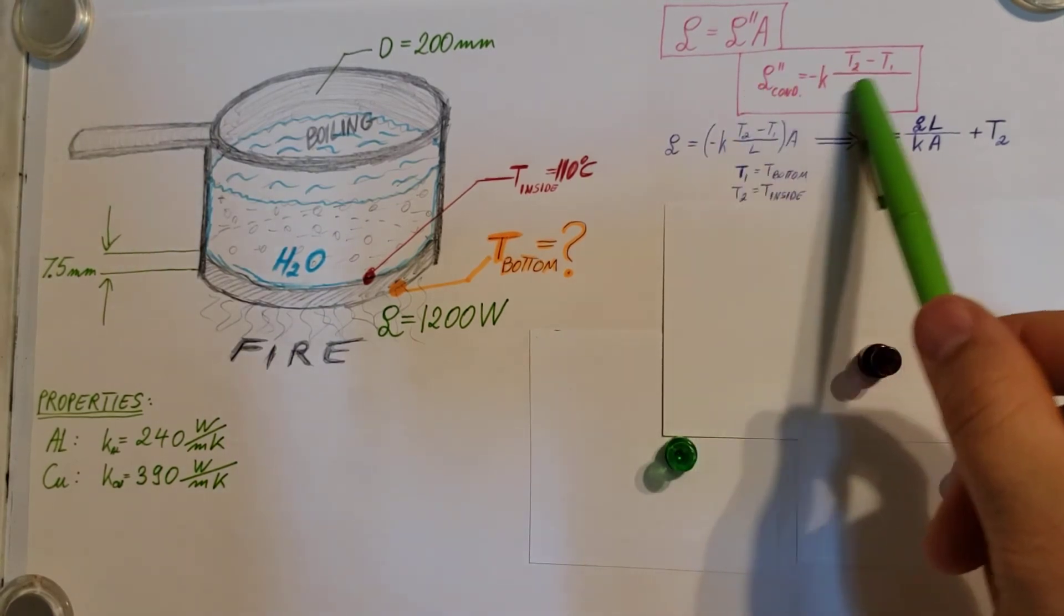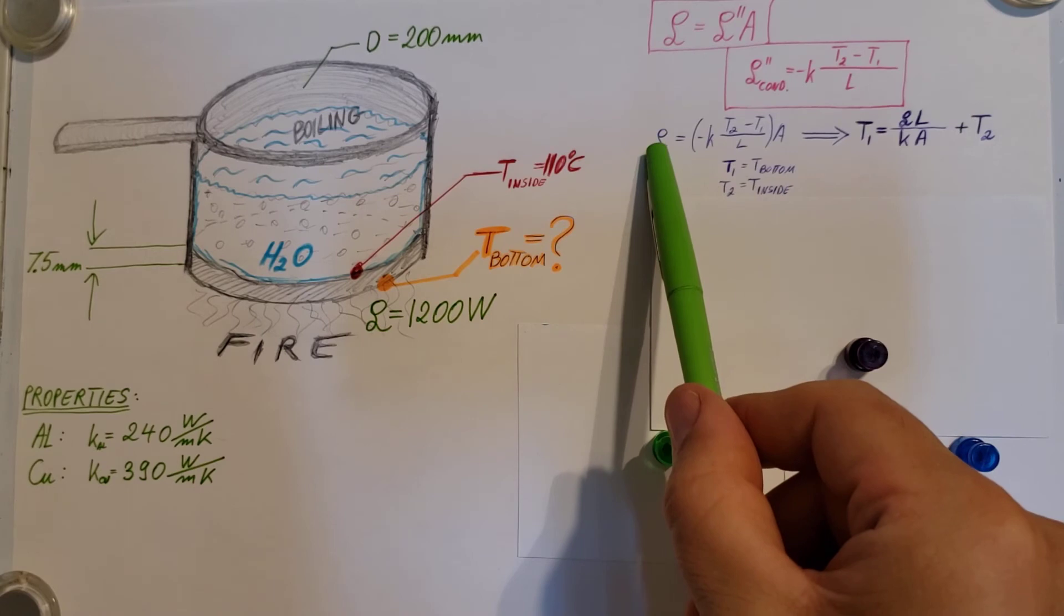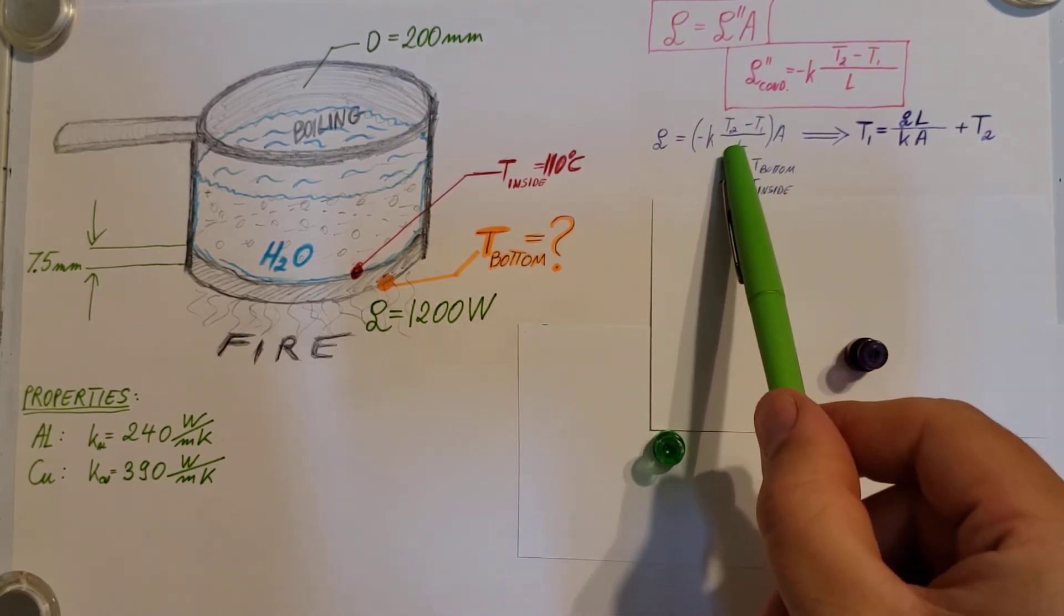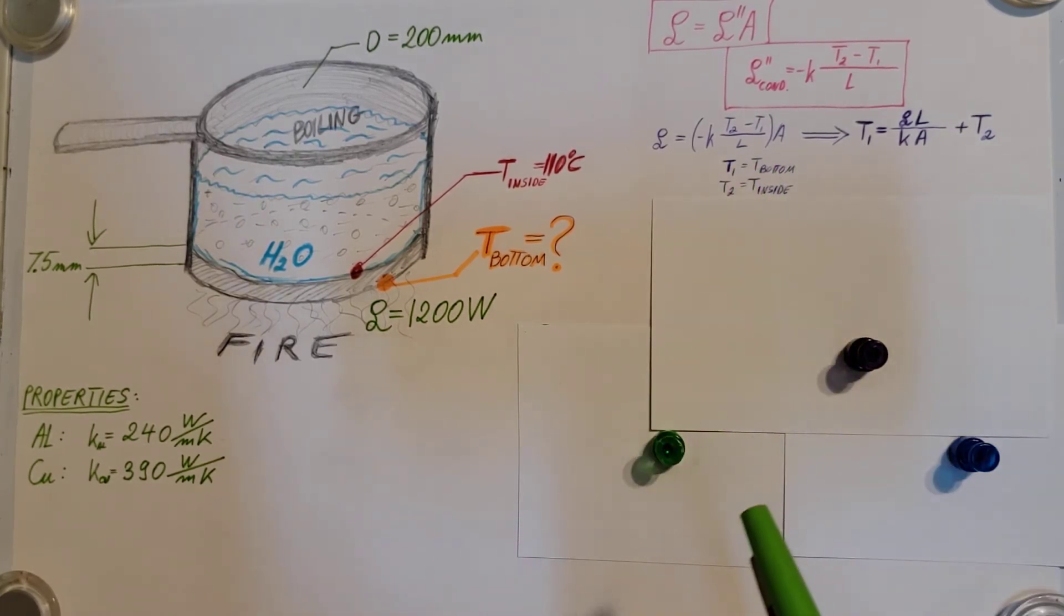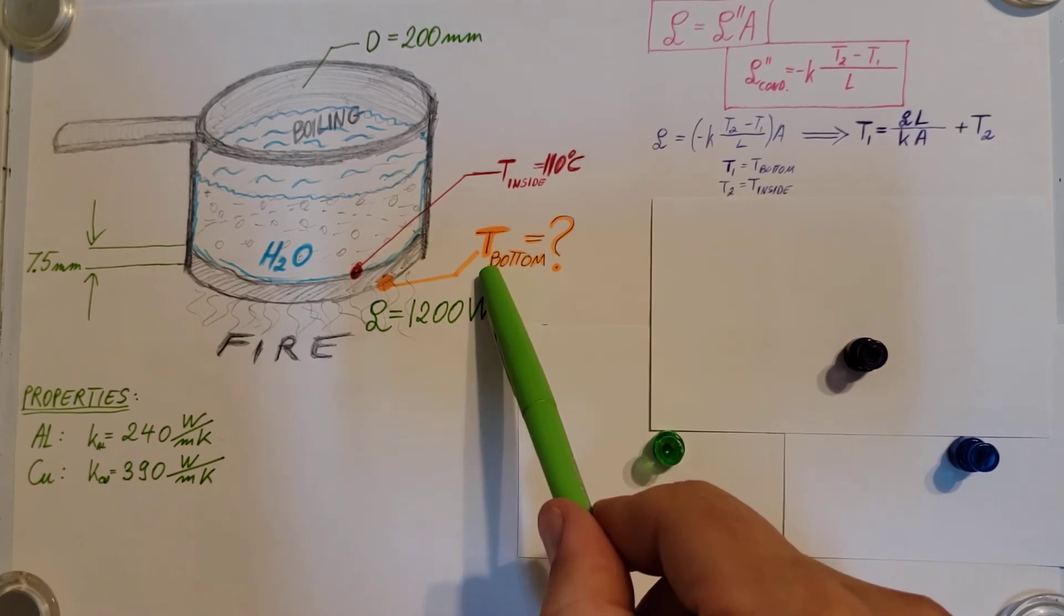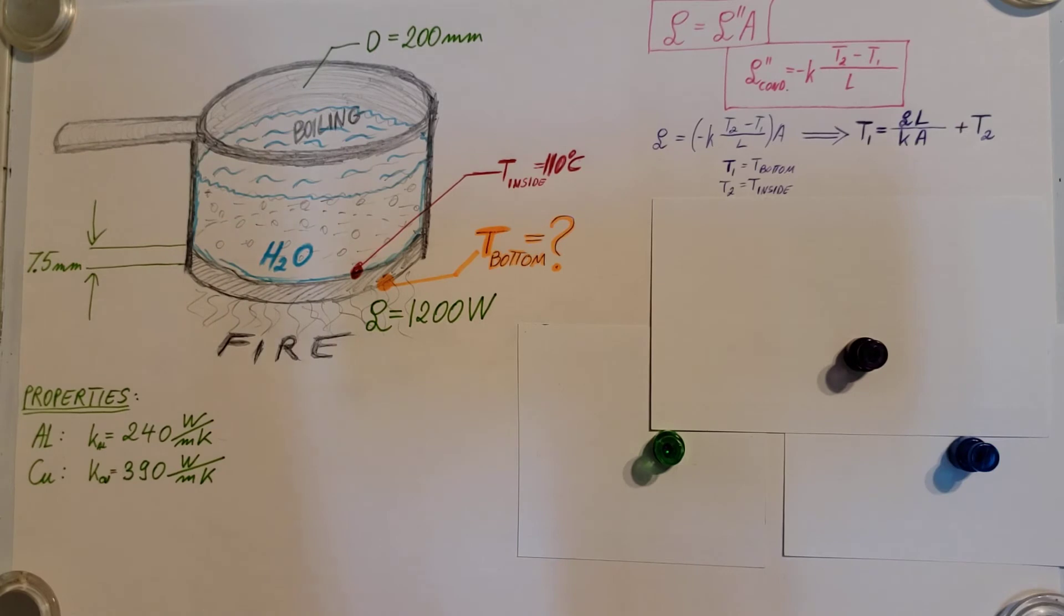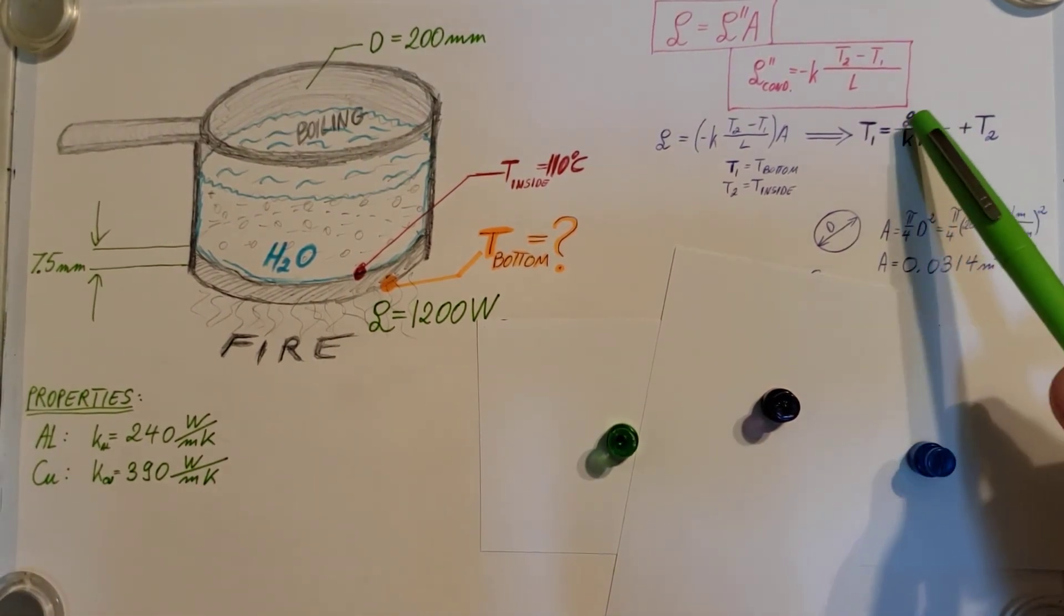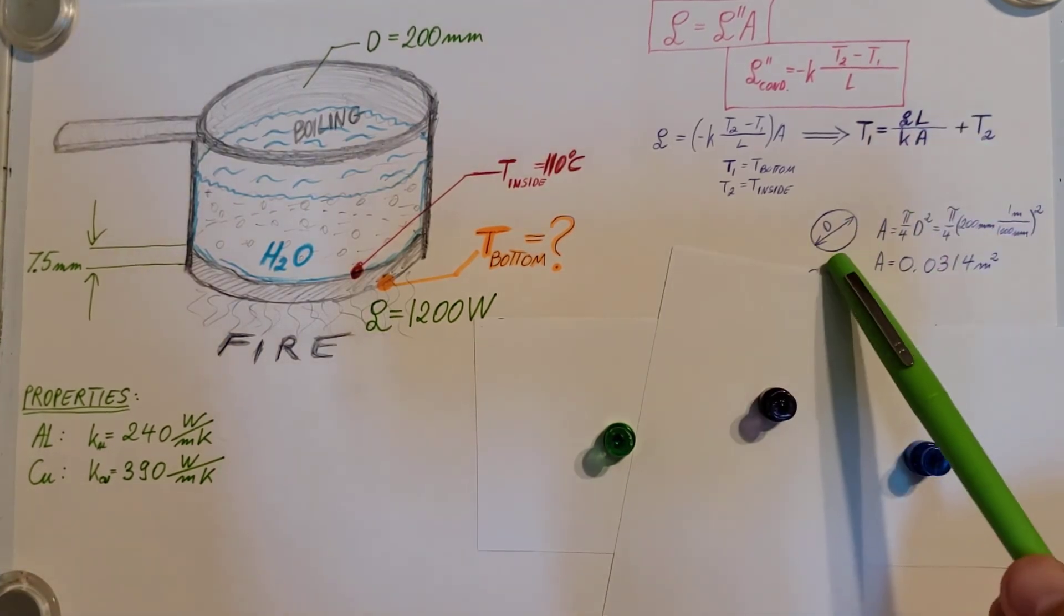I went ahead and took my flux and plugged it into the heat formula. So heat equals our flux times the area. Here's T1 and T2 as I designated it, so I'm going to need T1, which is my bottom temperature, and let's go ahead and solve for it. Analyzing it, we can see that we know every single value except the area, so let's go ahead and find that.